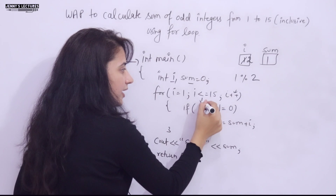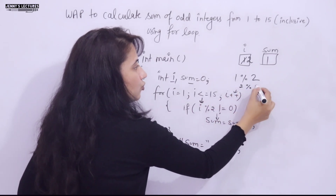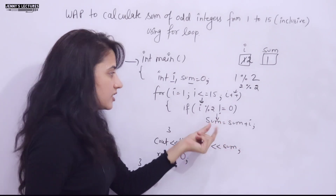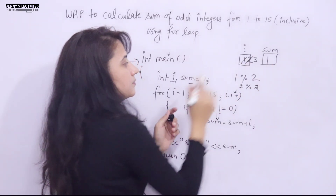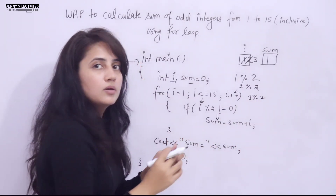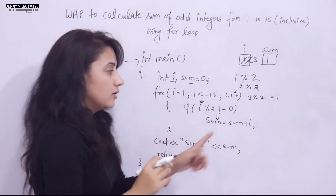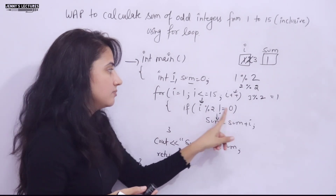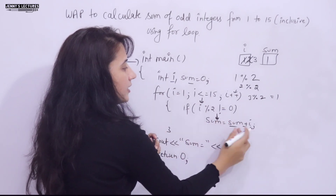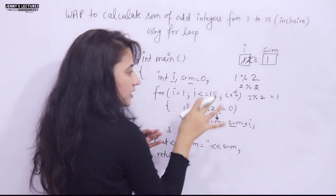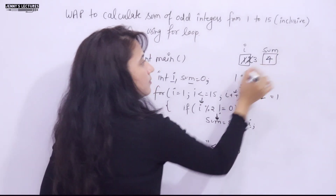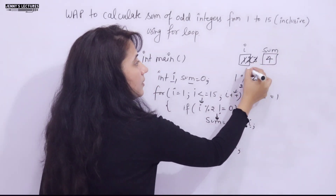i++ makes i = 2. Condition true again. Now 2 % 2 = 0, so the condition is not true — we skip the if block. i++ makes i = 3. Condition true. 3 % 2 gives remainder 1, not equal to 0, so we enter: sum = 1 + 3 = 4. Sum becomes 4.